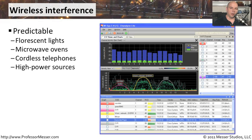Interference can come from a number of different places. Some very common sources of 2.4 GHz and 5 GHz interference are things like fluorescent lights — especially when a fluorescent light is going bad, it tends to put out a lot of radio signal interference. You can also find that in microwave ovens; every time someone starts popping popcorn, you tend to have problems on your wireless network.